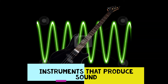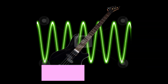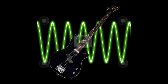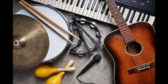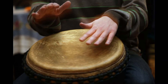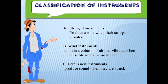Now let's discuss the instruments which produce sound. There are a number of musical instruments which produce different types of sounds. In each musical instrument, the vibrating part is different. According to the parts that vibrate, we can divide musical instruments into three main groups: instruments that produce sound by vibrating strings, instruments that produce sound by vibrating membranes, and instruments that produce sound by vibrating air.